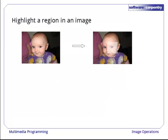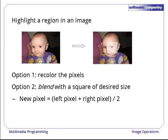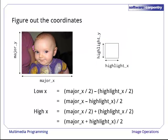For our last example, let's highlight a region in an image as shown here. There are two ways to do this: the first is to color the pixels, which we will leave as an exercise. The second is to blend a square of the desired size into the original. If we do this, the new value for each affected pixel is the average of the original values of the two images. As always, the first step is to figure out the coordinates of the region we are highlighting. If the overall picture's size is MajorX by MajorY, and the highlight's size is HighlightX by HighlightY, a little math gives us the coordinates shown here.